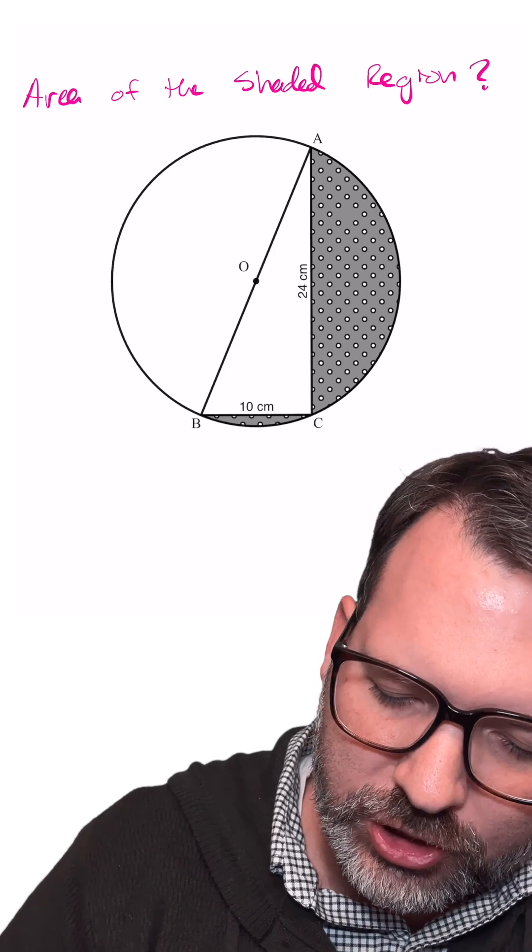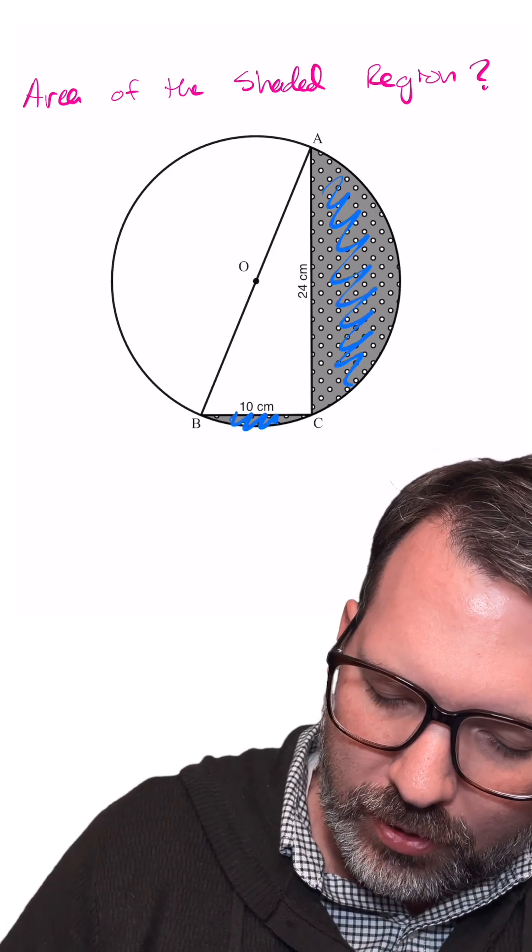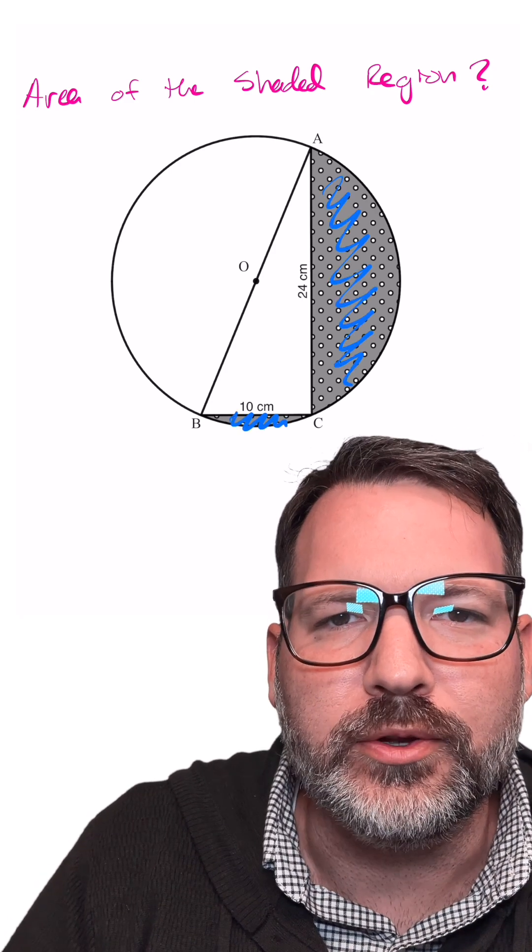What is the area of the shaded region here? This kind of area between the triangle and the circle below the hypotenuse of the right triangle.